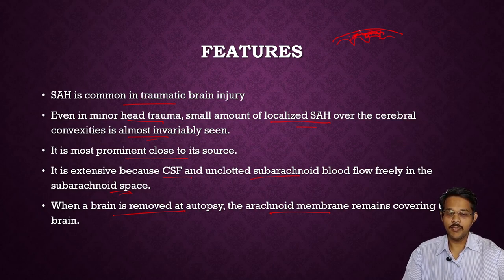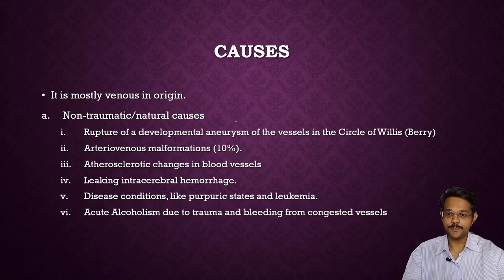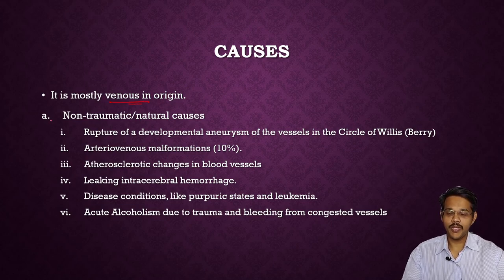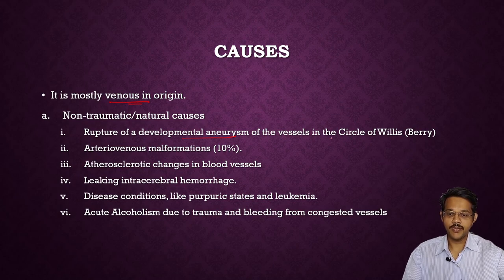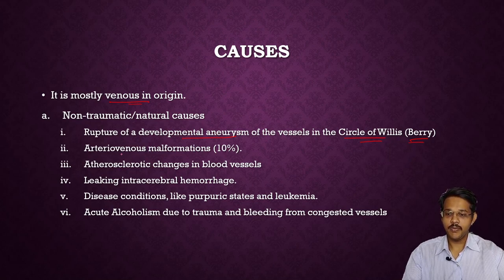When the brain is removed at autopsy, since the subarachnoid membrane remains covering the brain, bleeding occurs between the gyri and blood clot below the arachnoid space can be identified as subarachnoid hemorrhage. Causes: it is mostly venous in origin and may be non-traumatic or traumatic. Non-traumatic causes include rupture of developmental aneurysms (commonly berry aneurysms in the circle of Willis), arteriovenous malformations (10% of cases), and atherosclerotic changes in blood vessels.